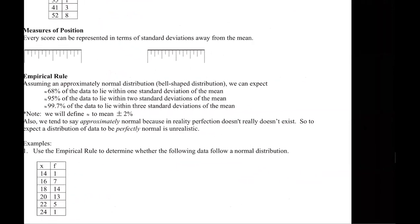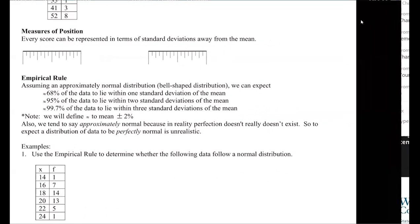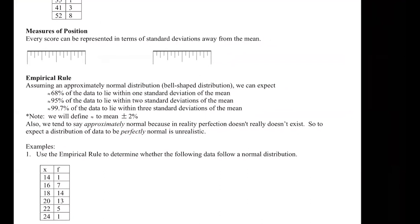The statement here is that every score can be represented in terms of standard deviations away from the mean. So it's a kind of a weird thing to talk about, because the standard deviation talks about the measure of spread, but now I'm talking about it as if it's a measurement itself — like inches and feet and stuff along those lines.